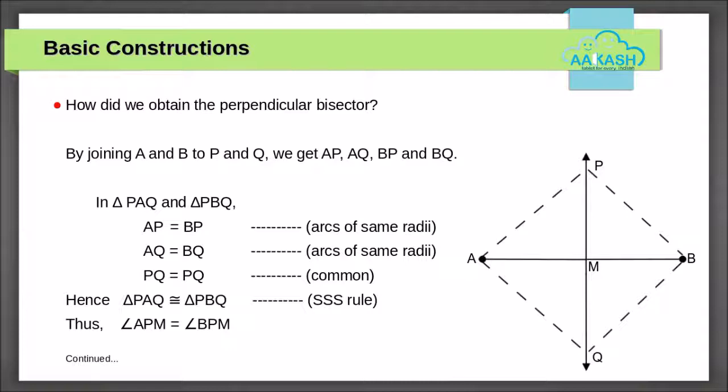Now we will see how we obtained the perpendicular bisector. When we join both A and B with both P and Q, we get AP, AQ, BP, and BQ. In triangles PAQ and PBQ, AP is equal to BP because they are arcs with the same radius. AQ is equal to BQ since they have arcs of equal radii. PQ is equal to PQ since it is common. Therefore, using SSS rule, triangle PAQ is congruent to triangle PBQ. Hence we can say angle APM is equal to angle BPM.